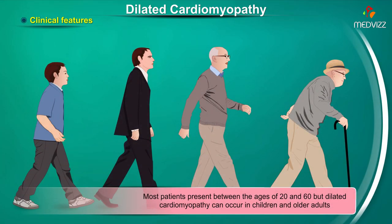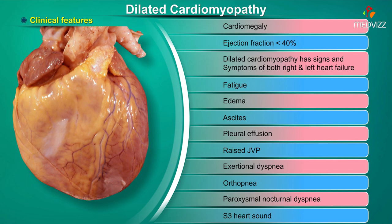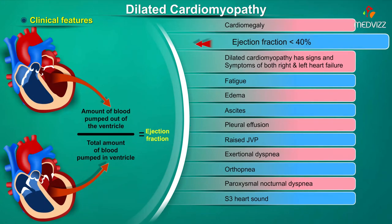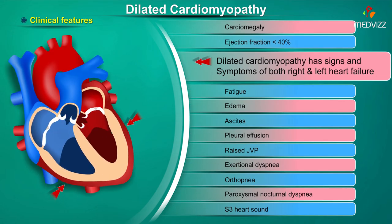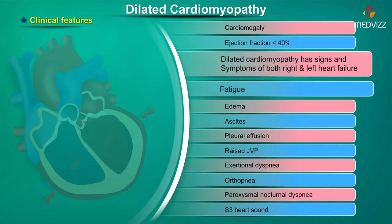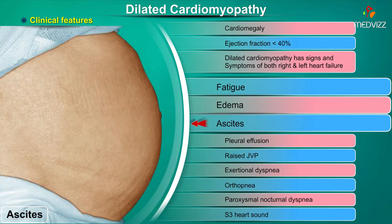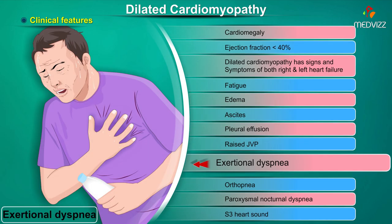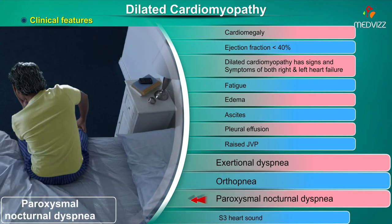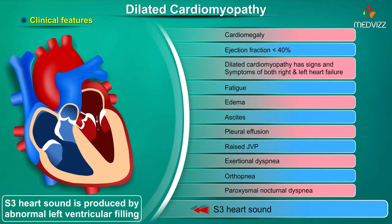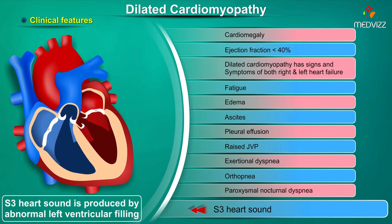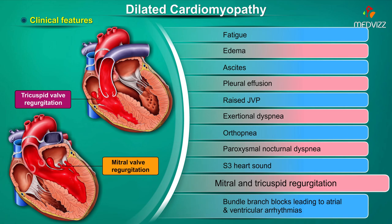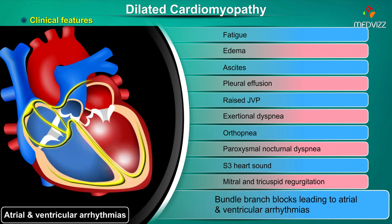Most patients present between the ages of 20 and 60, but dilated cardiomyopathy can occur in children and older adults as well. Patients have cardiomegaly and an ejection fraction less than 40 percent. They present with signs and symptoms of both right and left heart failure: fatigue, edema, ascites, pleural effusion, and raised jugular venous pressure are features of right heart failure, while exertional dyspnea, orthopnea, and paroxysmal nocturnal dyspnea are features of left heart failure. S3 is highly specific for dilated cardiomyopathy, and there can be mitral and tricuspid valve regurgitation along with bundle branch blocks leading to atrial and ventricular arrhythmias.